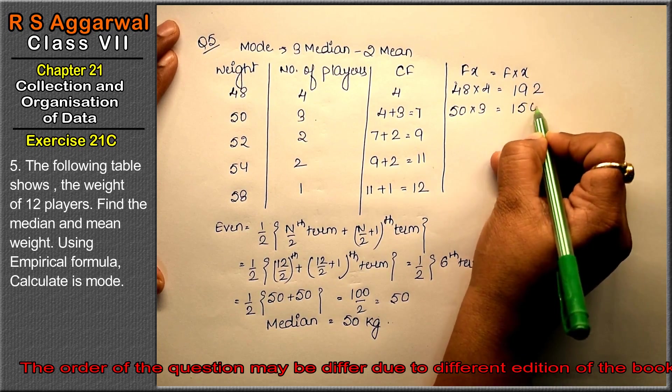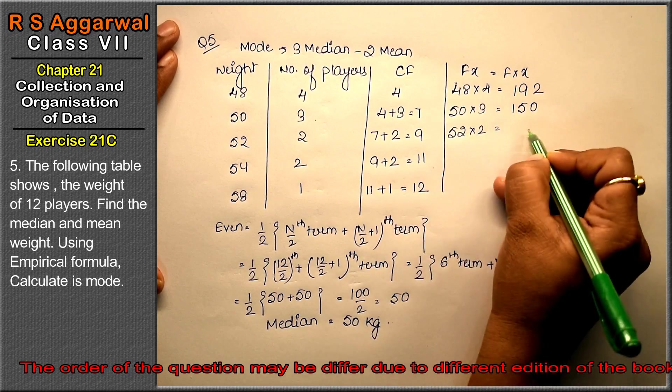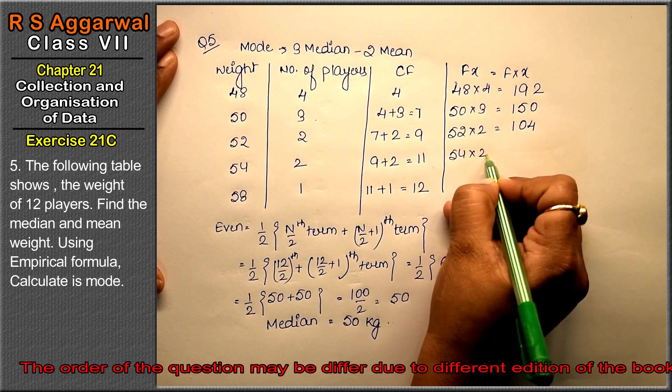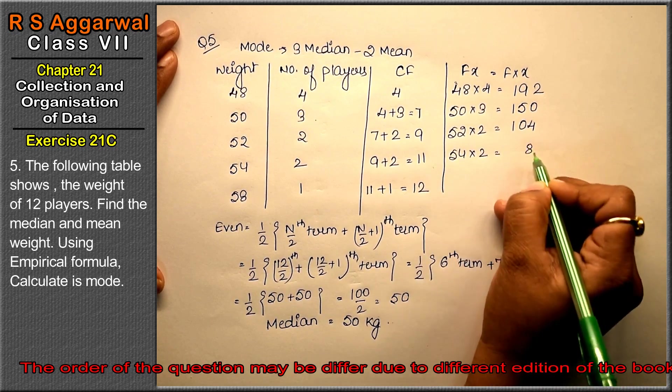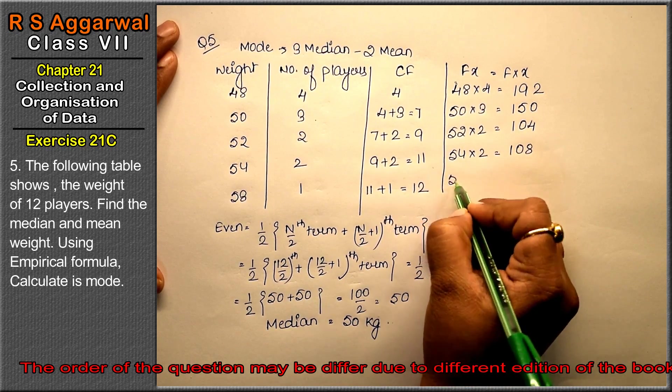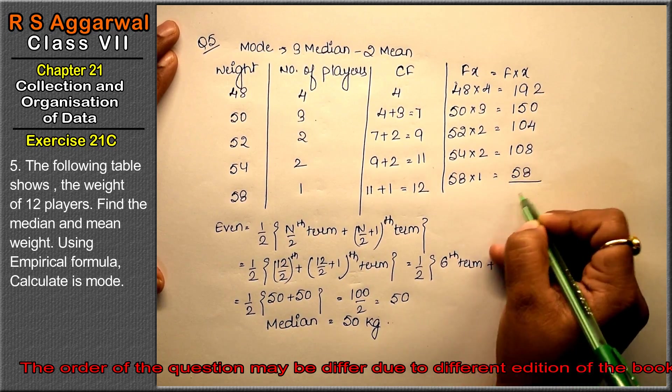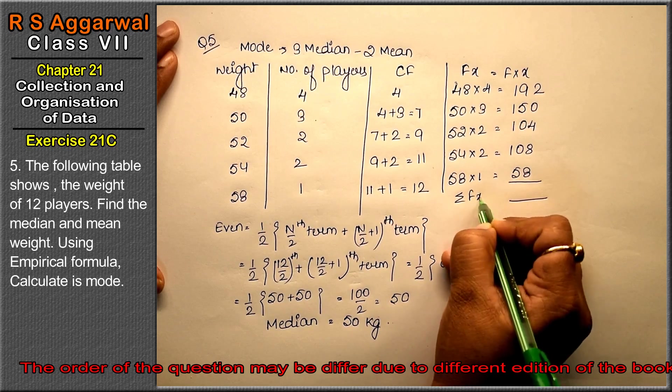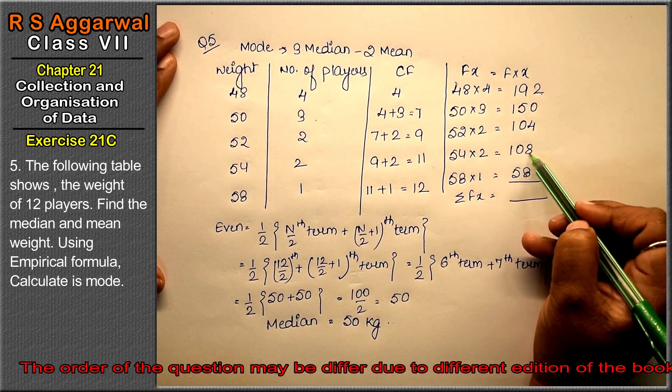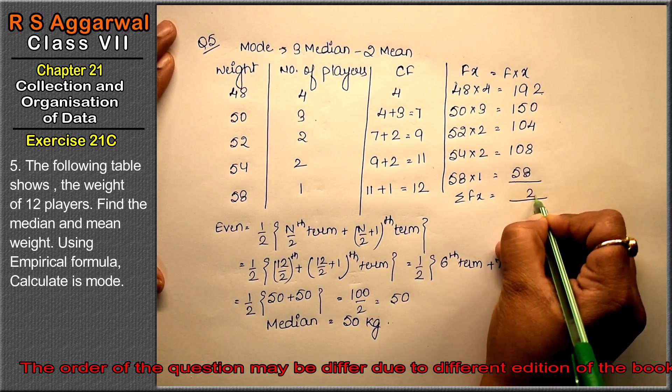52 into 2: 2 twos are 4, 2 fives are 10, equals 104. 54 into 2: 2 fours are 8, 2 fives are 10, equals 108. 58 into 1 equals 58. Now we have sigma Fx. 8 and 2 is 10, 10 and 8 is 18, 19, 20, 21, 22.